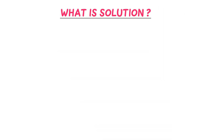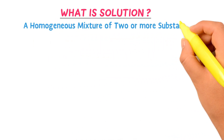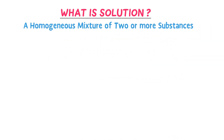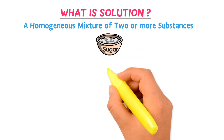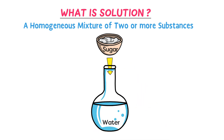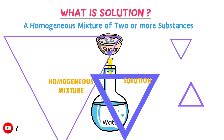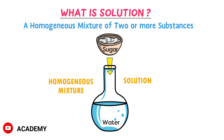What is a solution? A homogeneous mixture of two or more than two substances is called a solution. For example, when you add sugar to water, you form a homogeneous mixture of sugar and water. This homogeneous mixture is called a solution.